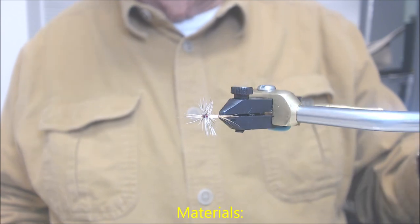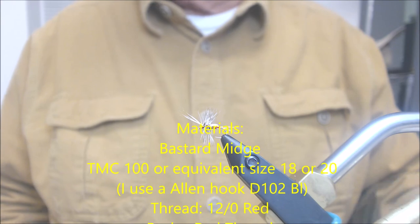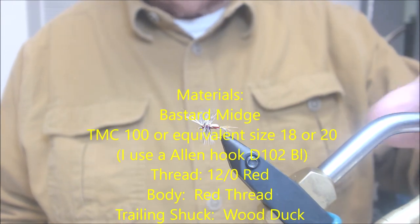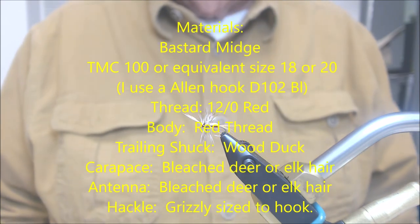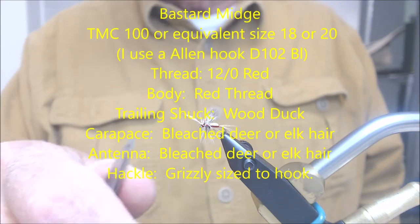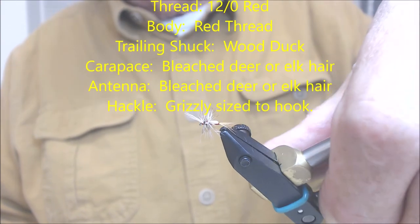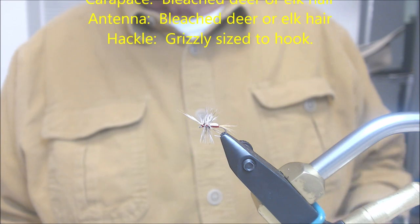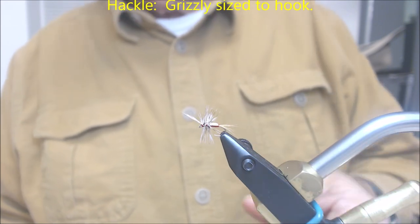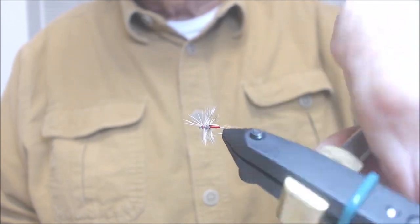Now we have the Herder's Bastard midge. Fish it behind a crackleback or another dry fly. Grease up the hackle. Try to keep the grease off of the antennae and the body. It'll float well in the water. Fish it behind a fly that you can see because it is difficult sometimes to see this in the water. Good pattern, a good midge pattern.